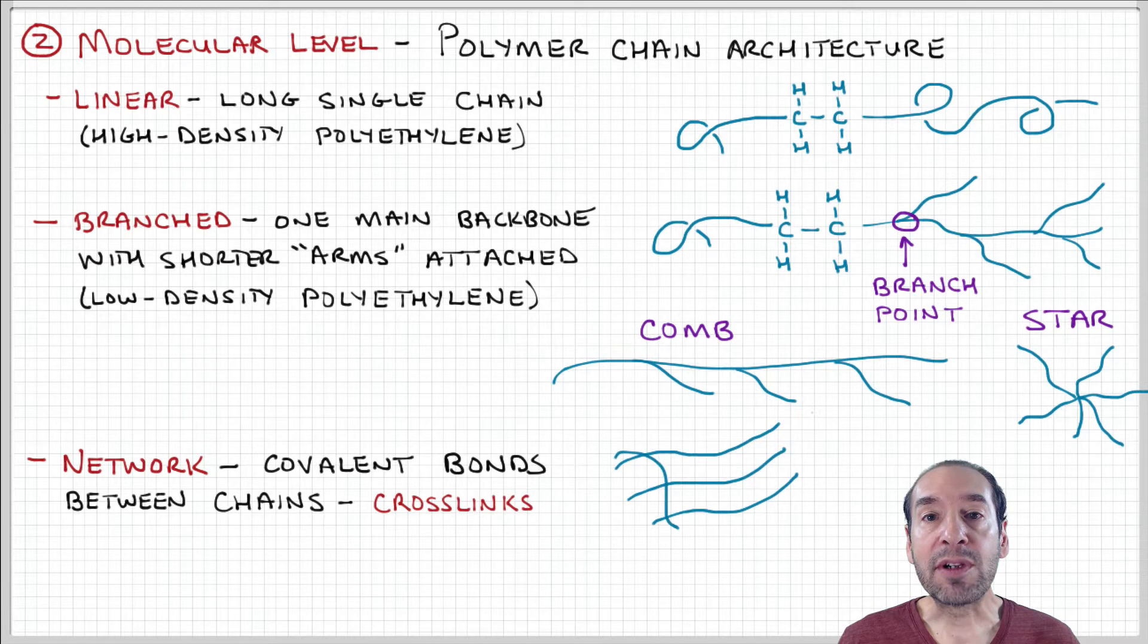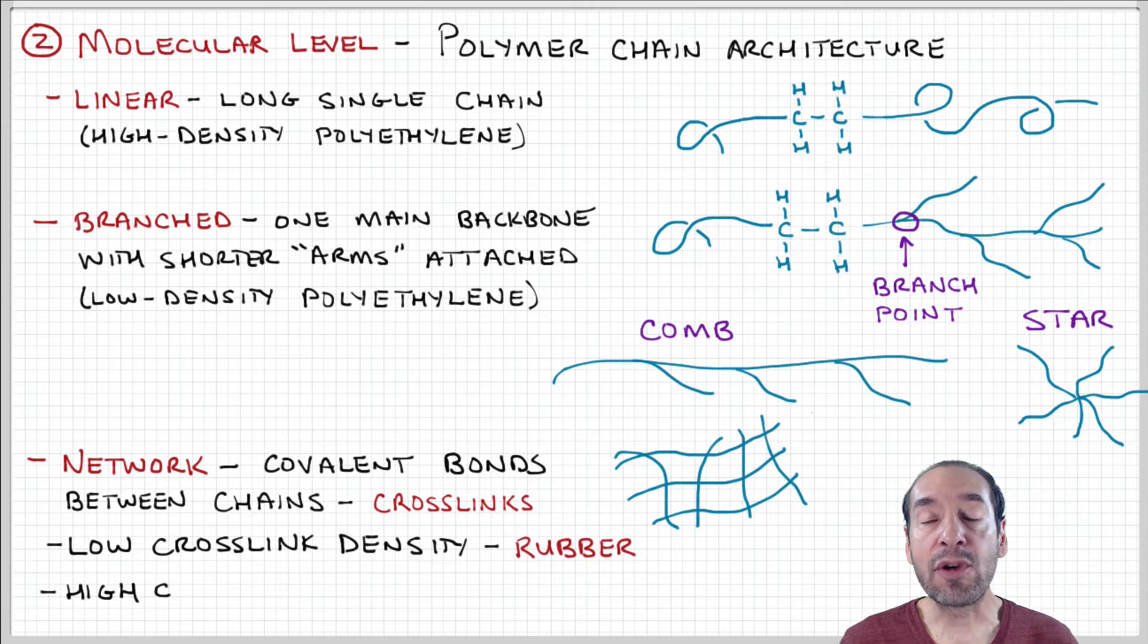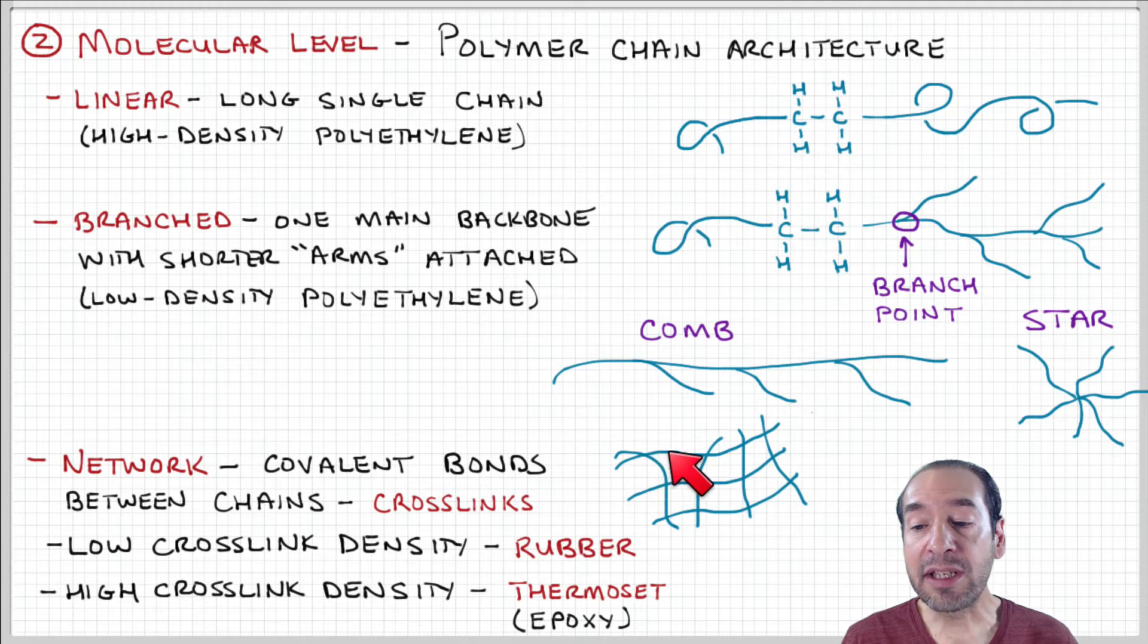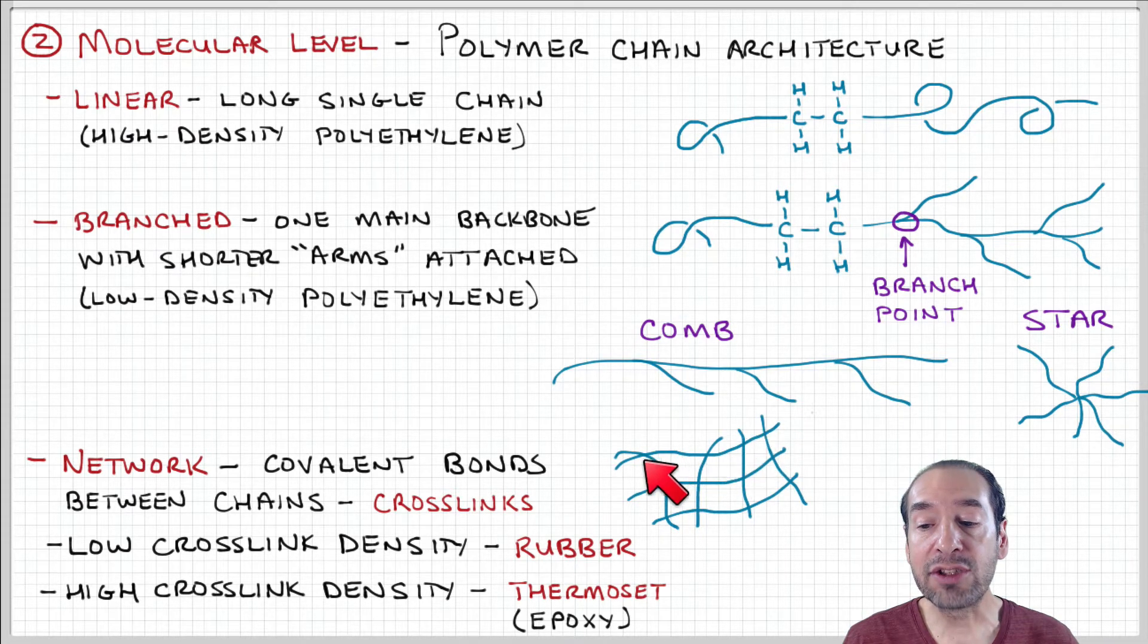Network polymers are architectures where cross-linking or joints form between neighboring polymer chains. This is exactly what happened in the vulcanization of rubber—polymer chains became chemically bonded together to form a network. This network could be formed by permanent chemical bonds or temporary interactions, and the strength and density of these cross-links will dictate the mechanical behavior.